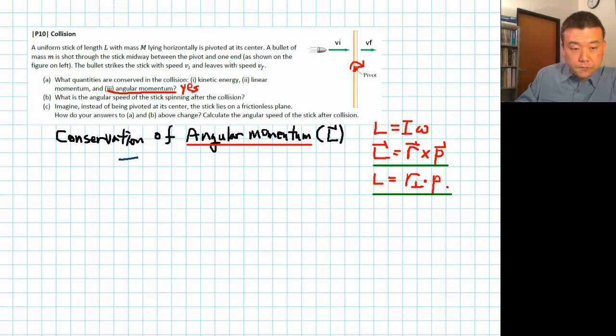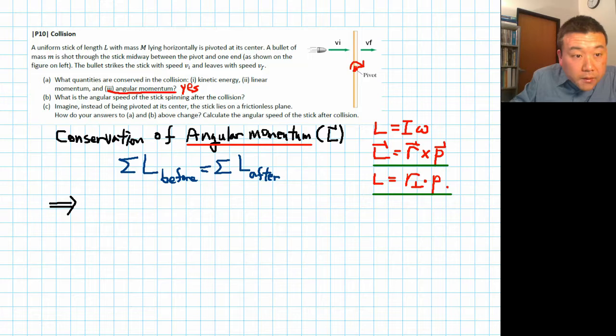We can say, the total of the angular momentum before collision is equal to the total of the angular momentum after the collision. Before the collision, there was no angular momentum of the rod. So you only had angular momentum of the bullet to worry about. I think we are given this distance for the lever arm to stick the midway. So if we say that the entire stick has length L, then this distance from pivot to where the bullet strikes, that's L over 4, and that's our lever arm. So we can say the angular momentum before, lever arm times momentum, L over 4 times momentum, and VI